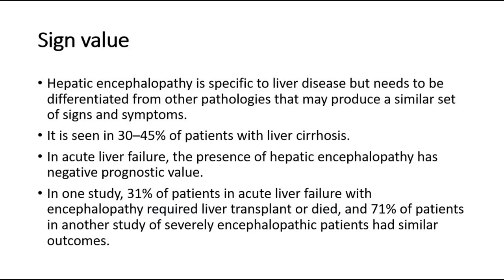For its sign value, hepatic encephalopathy is specific to liver disease but needs to be differentiated from other pathologies that may produce a similar set of signs and symptoms. It is seen in 30-45% of patients with liver cirrhosis. In acute liver failure, the presence of hepatic encephalopathy has negative prognostic value. In one study, 31% of patients in acute liver failure with encephalopathy required liver transplant or died, and 71% of patients in another study of severely encephalopathic patients had similar outcomes. So hepatic encephalopathy is associated with poor prognosis.